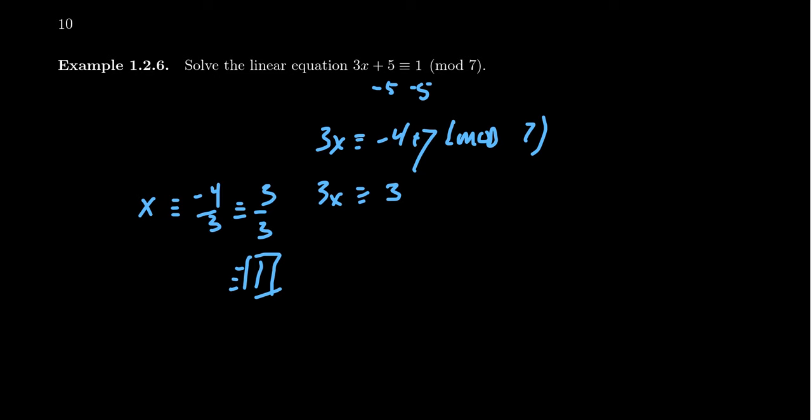But if the denominator doesn't divide into the numerator completely, we can just replace the numerator with some integer congruent to it with respect to the current modulus and then simplify the fraction in the usual manner.